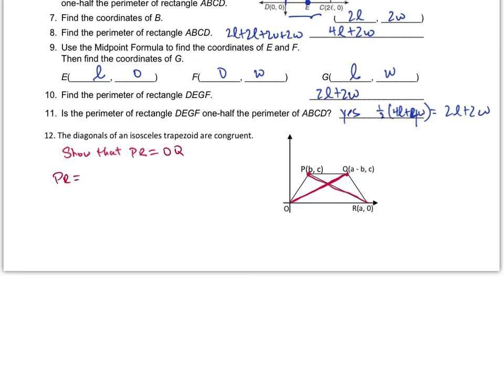All right, so PR, and then all I have to do is just do the steps. PR is going to be, and I'm going to use a distance formula for this one. So I will get the square root of A minus B squared, and then 0 minus C squared. Because the distance, remember, is the square root of X2 minus X1 squared plus Y2 minus Y1 squared. Okay, so over here, we end up with the square root of A minus B squared plus C squared. And I can't reduce that.